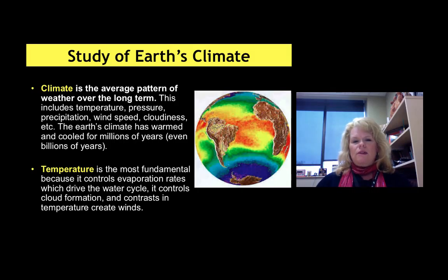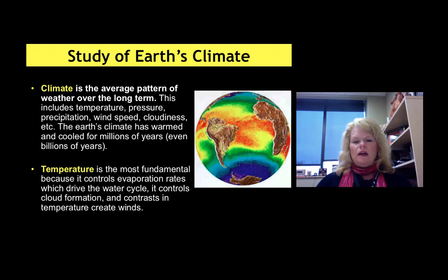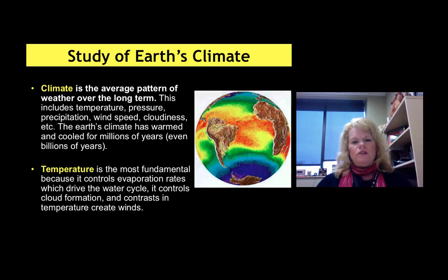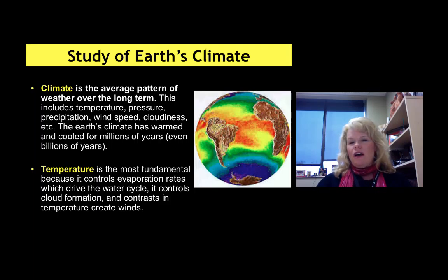Earth's climate has been measured faithfully and consistently probably for the last 50 or so years, with an emphasis over the last 30. Out of all the things that climate measures, temperature by far is the most important, because it controls things like evaporation rates, drives the water cycle, deals with cloud formation, wind formation — all of which help drive climate — and also ocean circulation. You can't forget that the ocean is one of the most powerful parts of the Earth's climate.